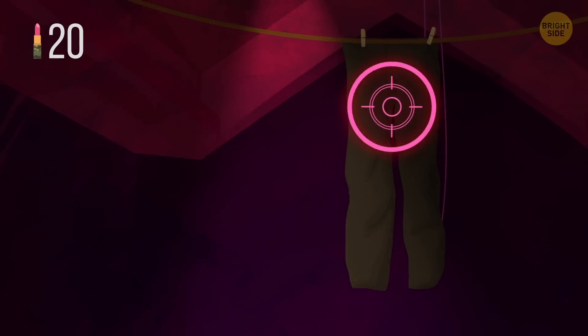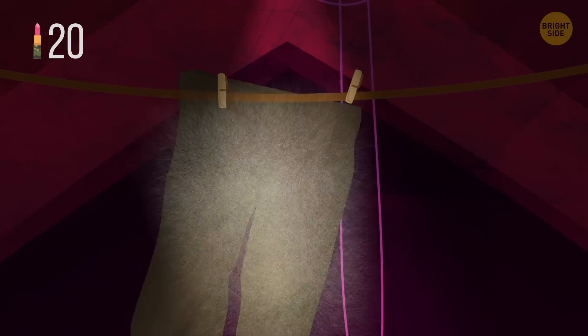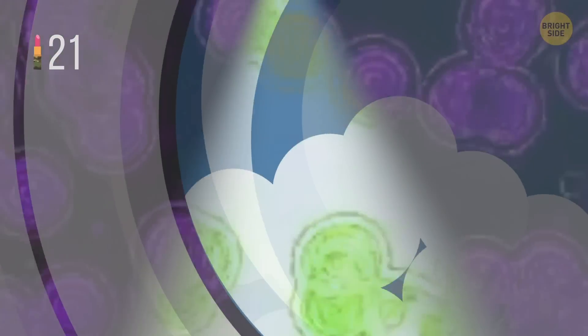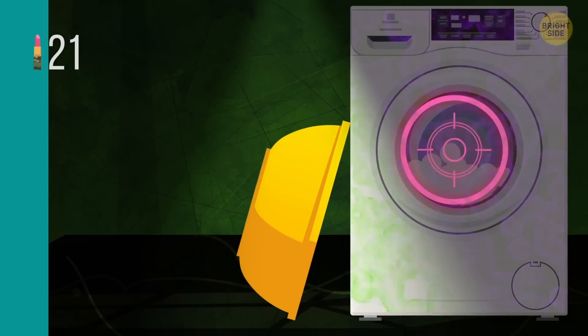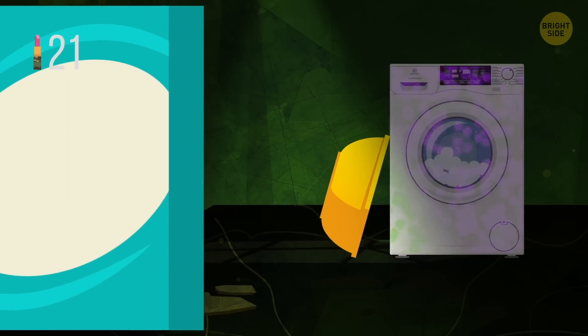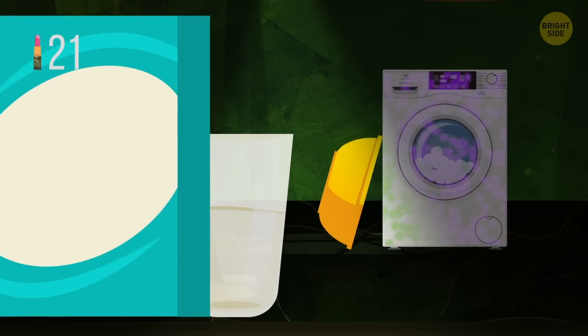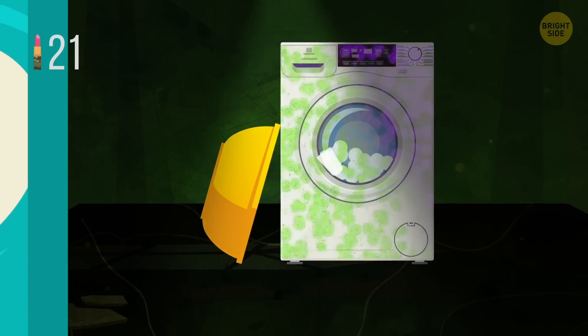Half a cup of white vinegar will save dark denim from fading. To prevent mold and mildew from growing inside your washing machine, put half a cup of borax, which is a natural alkaline mineral salt, together with your laundry load.